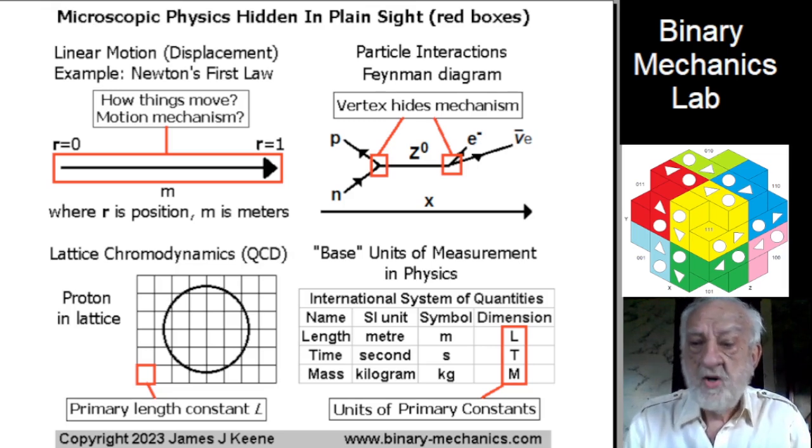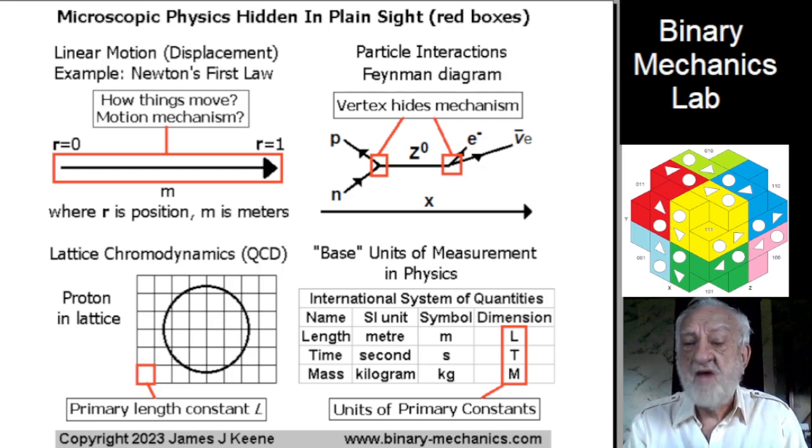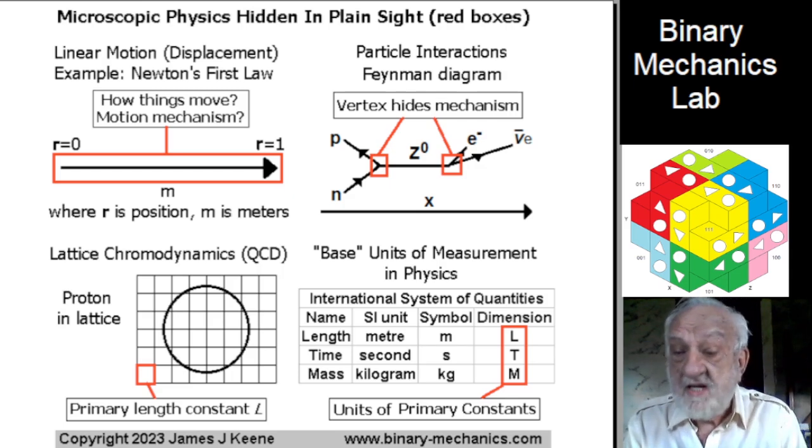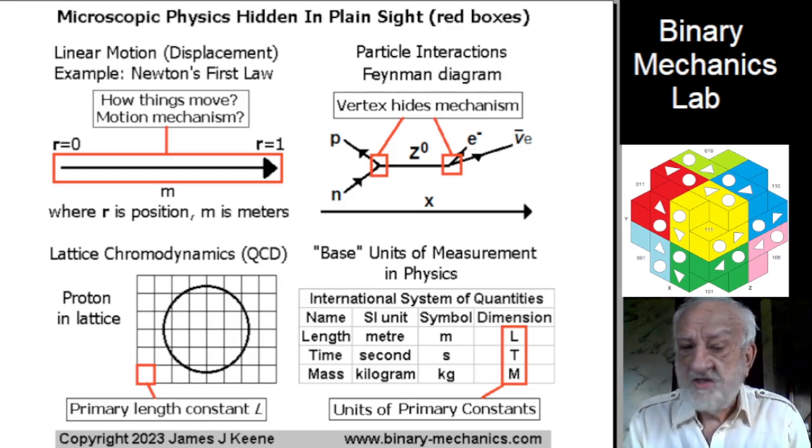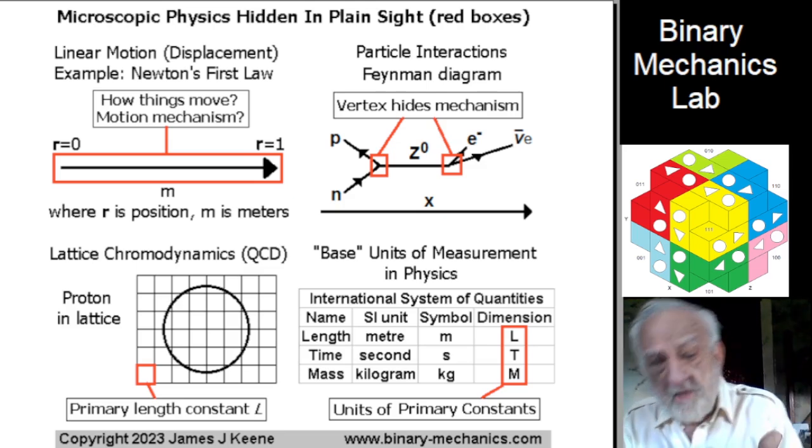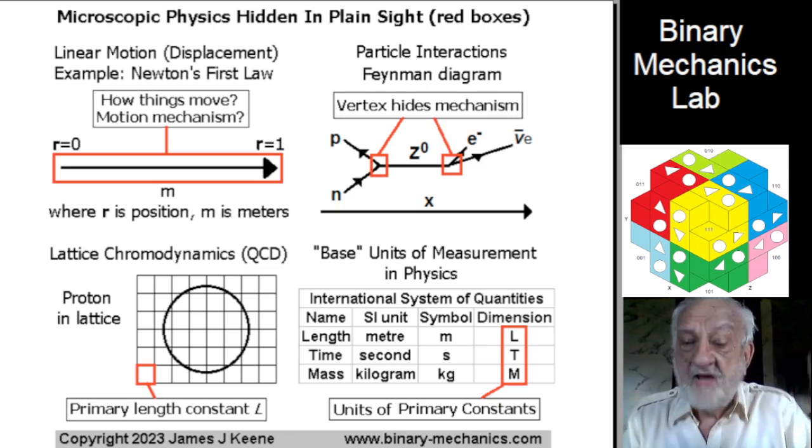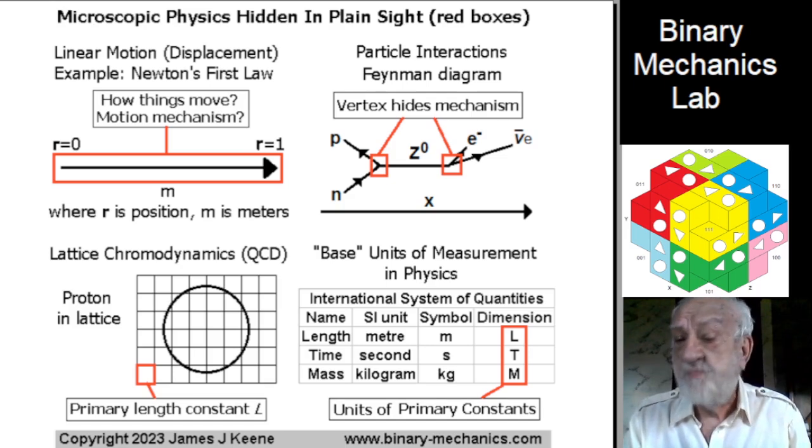Next, consider particle interactions as shown in Feynman diagrams. Each vertex where lines meet hides the real physics at those crucial points. In contrast, binary mechanics presents the microscopic detail of what actually happens at these vertex points.